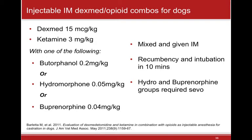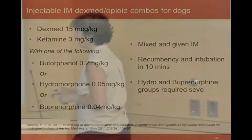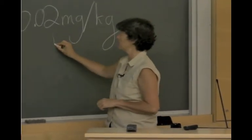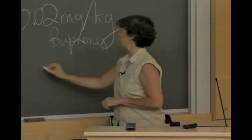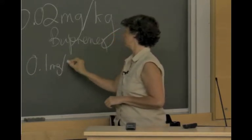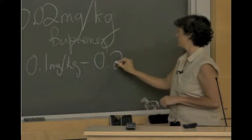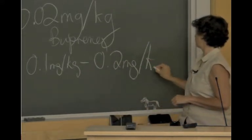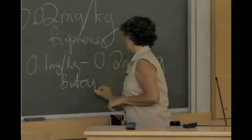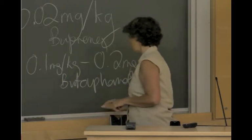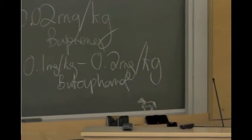The antiemetic dose of butorphanol is 0.1 to 0.2 mg per kg — that's the post-operative and anti-nausea dose. I don't use it for a lot of pain relief around surgery because I don't think it provides something in and of itself for surgical pain, but combined with dexmedetomidine and the right drugs it's definitely a good agent.